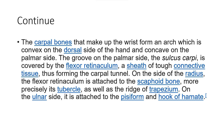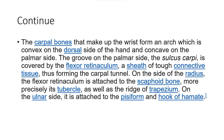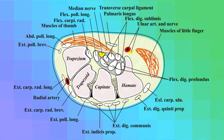The carpal bones that make up the wrist form an arch which is convex on the dorsal side of the hand and concave on the palmar side. The groove on the palmar side, the sulcus carpi, is covered by the flexor retinaculum — a sheath of tough connective tissue — thus forming the carpal tunnel.